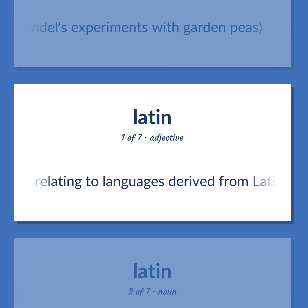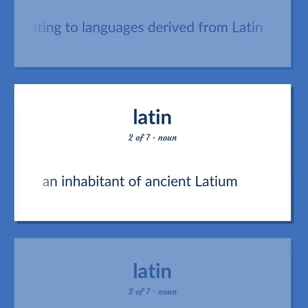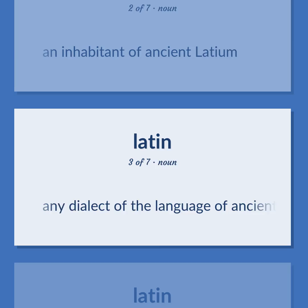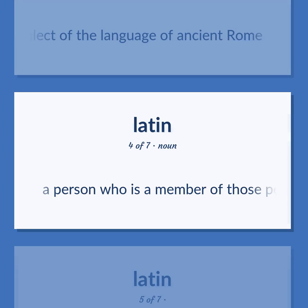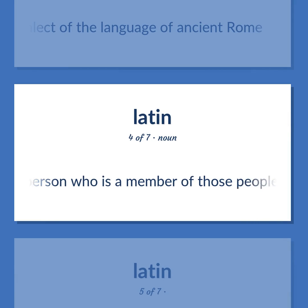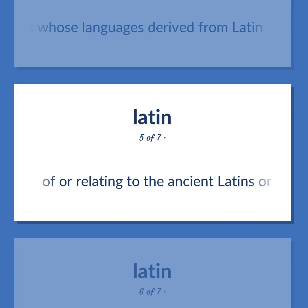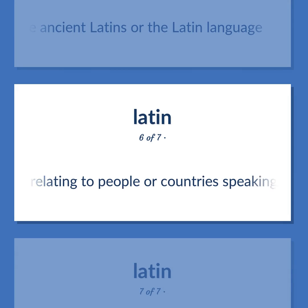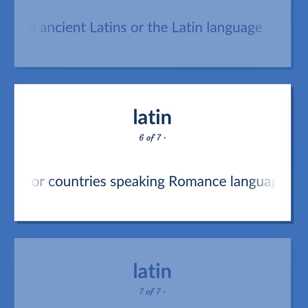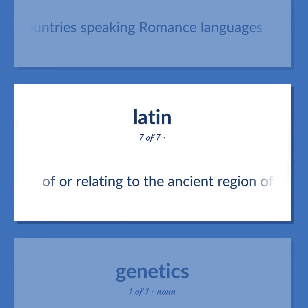LATIN — Relating to languages derived from Latin. An inhabitant of ancient Latium. Any dialect or the language of ancient Rome. A person who is a member of those peoples whose languages derived from Latin. Of or relating to the ancient Latins or the Latin language. Relating to people or countries speaking Romance languages. Of or relating to the ancient region of Latium.